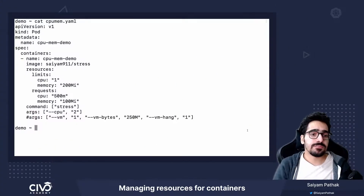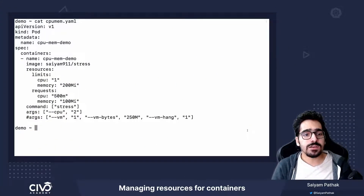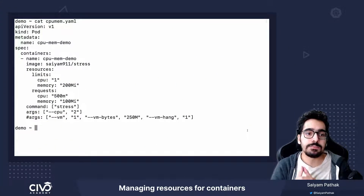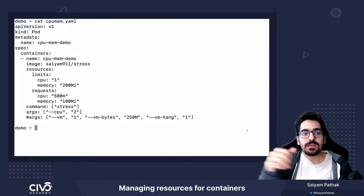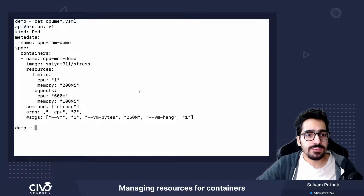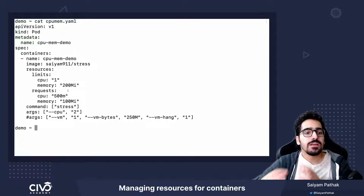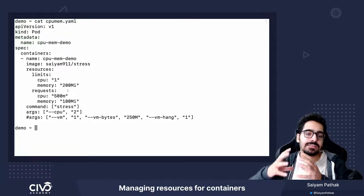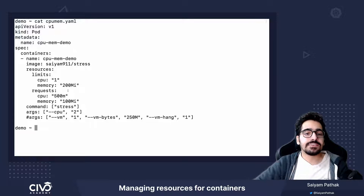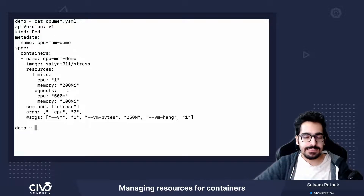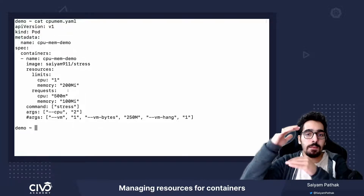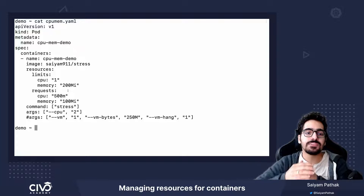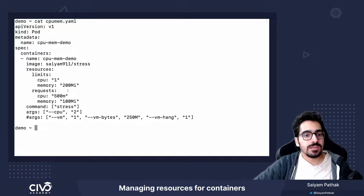In this lecture we'll go through container resource requests and limits. They fall under the resources section of the containers. Requests means these are the guaranteed resources that a container will get, and limits define the upper bound beyond which the container will not go.